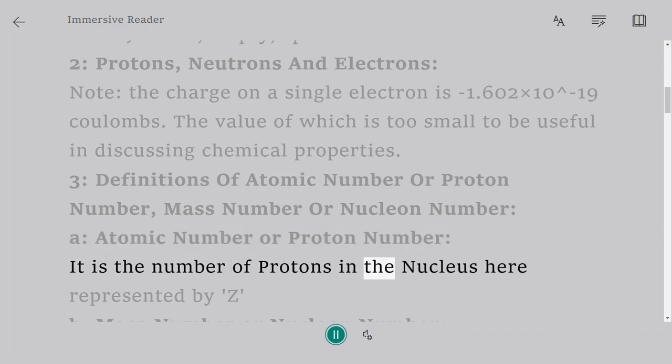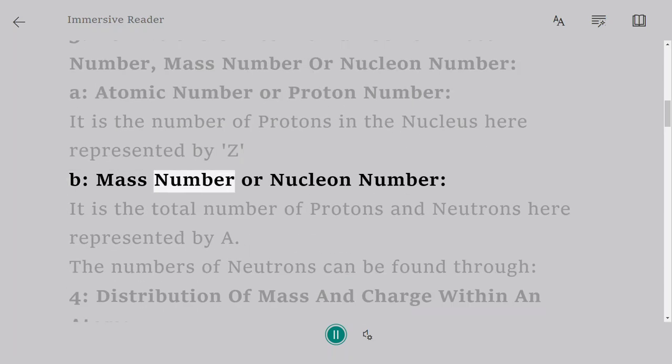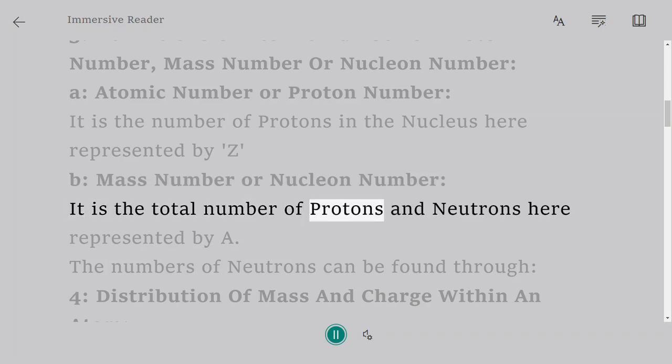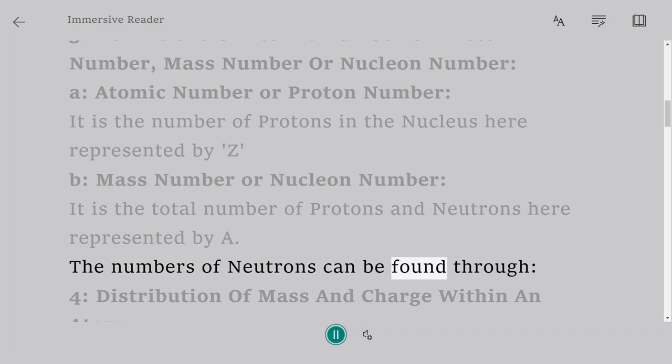It is the number of protons in the nucleus here represented by Z. B. Mass Number or Nucleon Number. It is the total number of protons and neutrons here represented by A. The number of neutrons can be found through